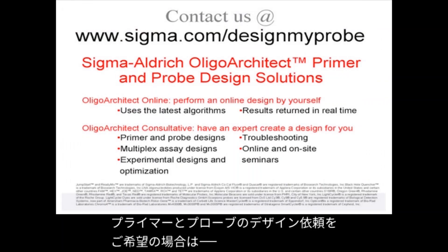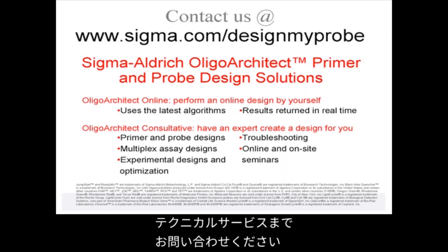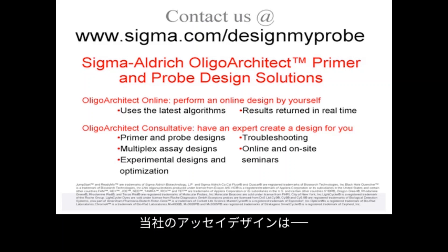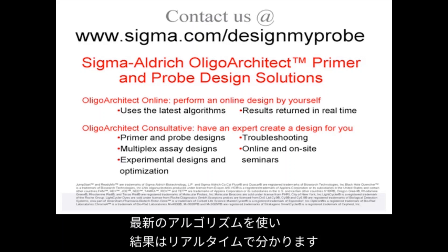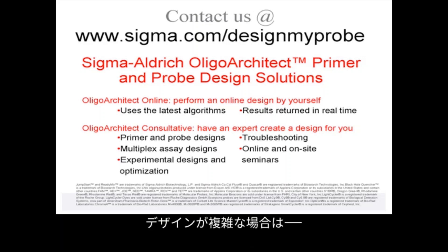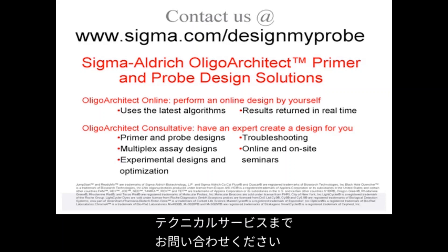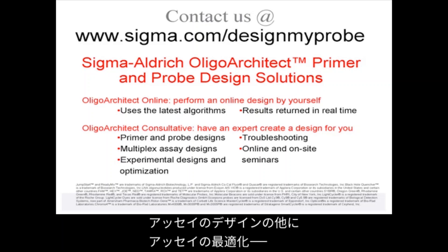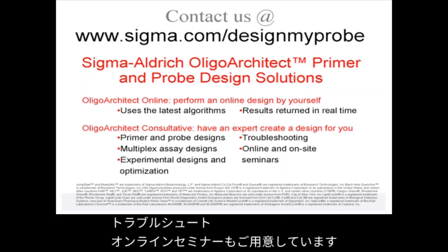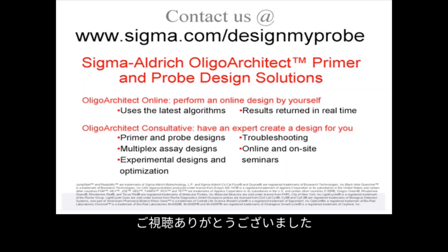If you would like assistance with the design of primers and probes, you can contact us via www.sigma.com/designmyprobe. We provide a free design service, and the feedback we have received has been very positive. On this site you will find Oligo Architect Online, which can help you design primers yourself using the latest algorithms with results returned in real time. For more complicated designs, you can click on Oligo Architect Consultative Design Service, where an expert will be appointed to create a design for you. We also provide assay optimization, troubleshooting, and online seminars. Thank you very much for listening.